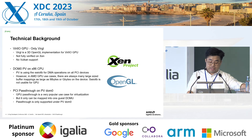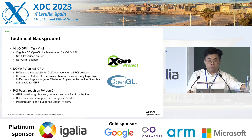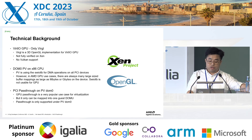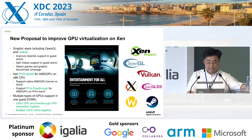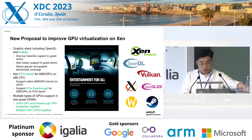Current PCIe pass-through is only supported by PV DOM0 on CPUs. GPU pass-through is a very popular use case for virtualization, but it can only be mapped into one guest VM. These are the current shortcomings of GPU virtualization on Xen, which we designed and implemented a new proposal to improve, one by one.